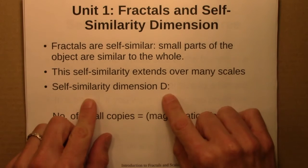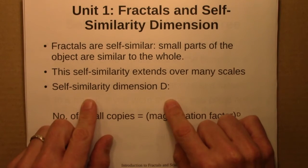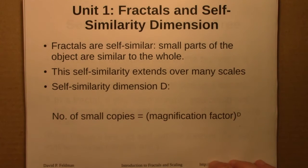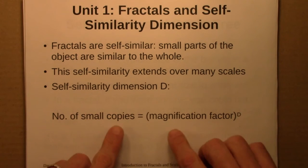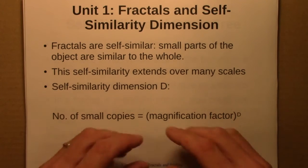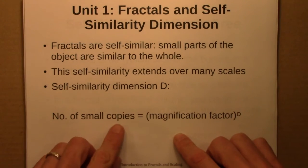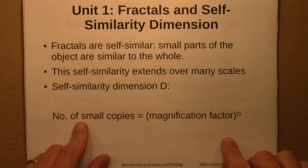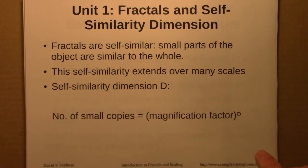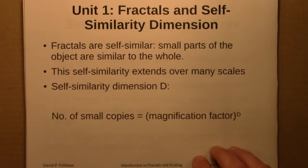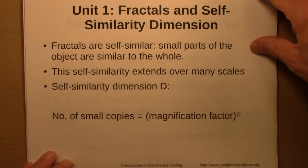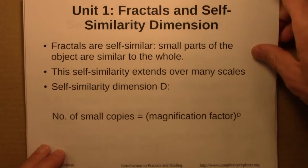We then said we can quantify or describe the self-similarity with a dimension D, defined by looking at magnification factors — how much we have to stretch up shapes — and how many small copies there are. The D that we need to make this equation true is a self-similarity dimension, and we calculated this for a number of geometric fractals like the Sierpinski Triangle.